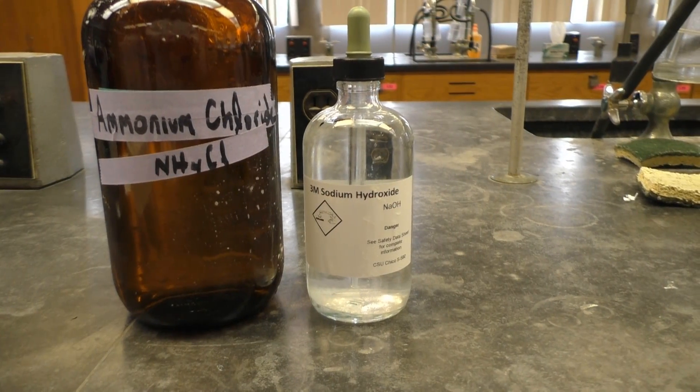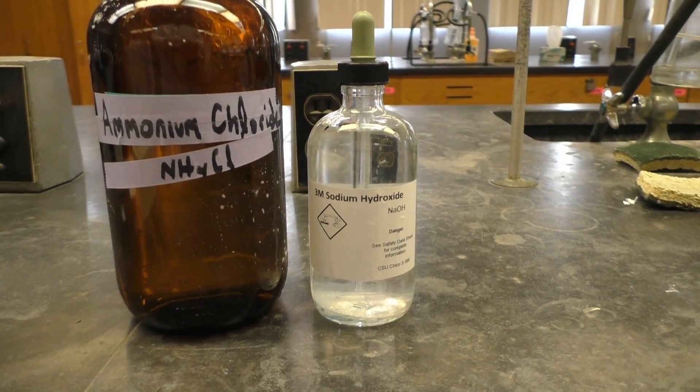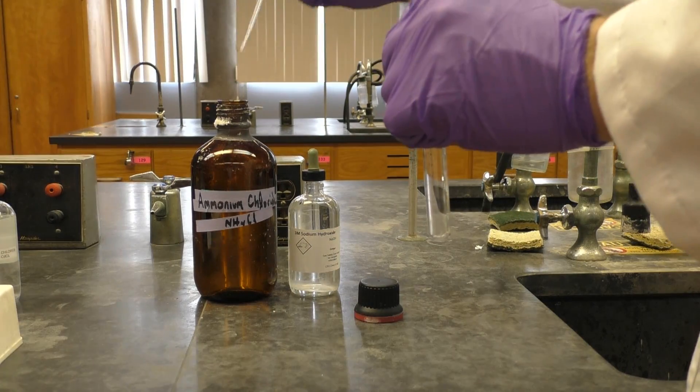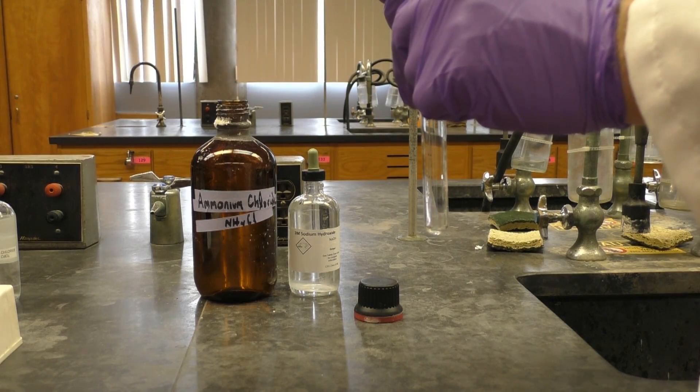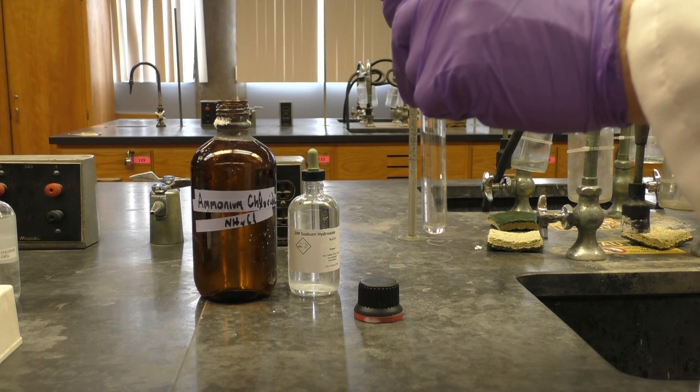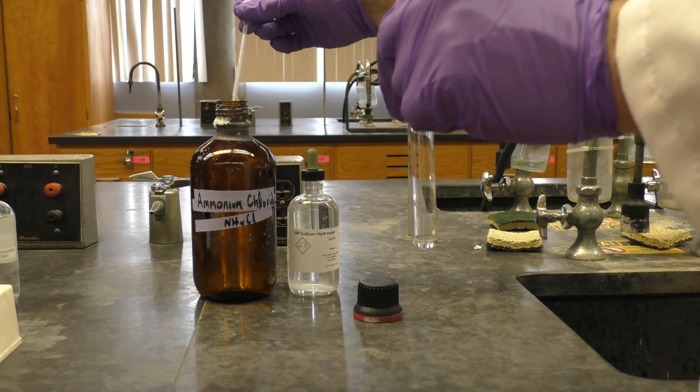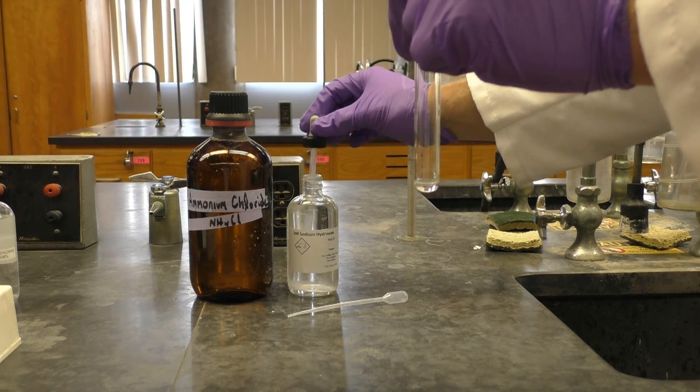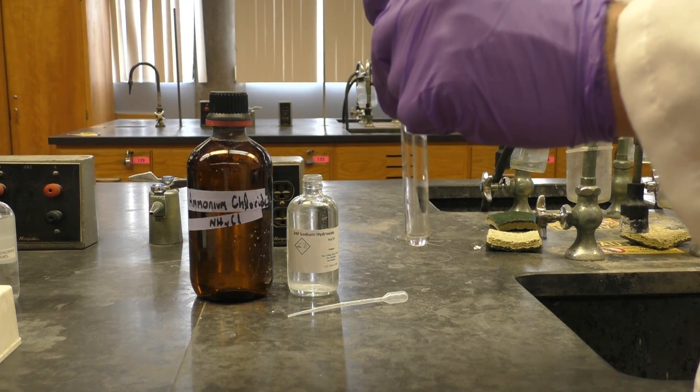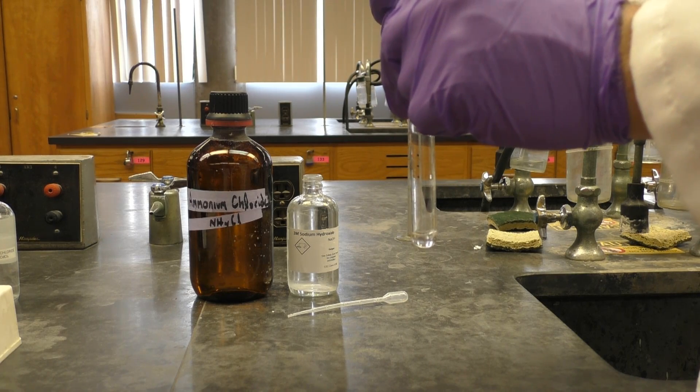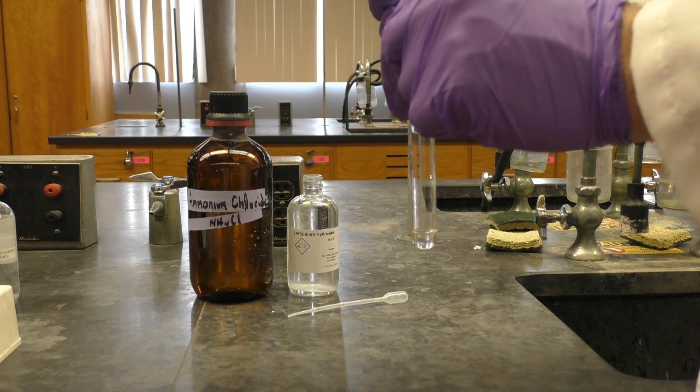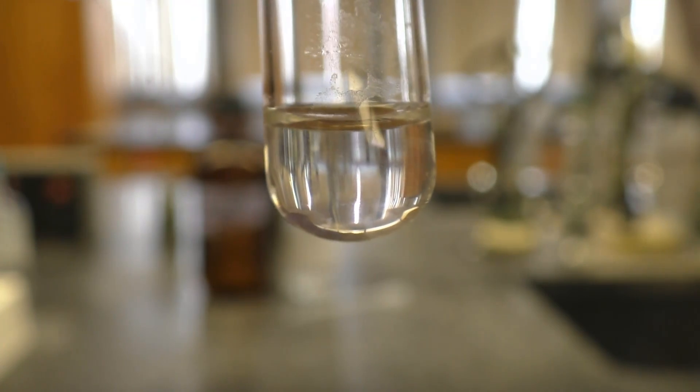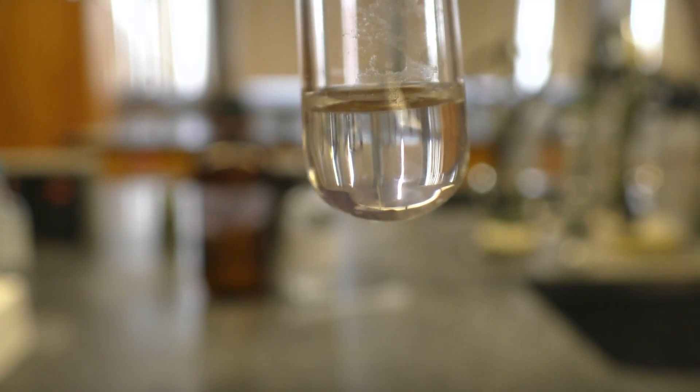Our next demo will be the reaction between ammonium chloride and NaOH. First, add 15 drops of ammonium chloride. Now add 15 drops of sodium hydroxide. Again, it seems that no reaction has occurred, but let's think about what's really going on.